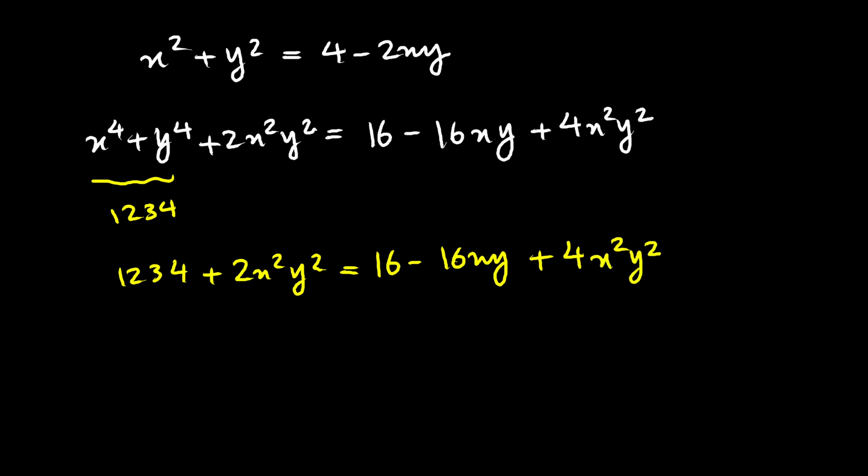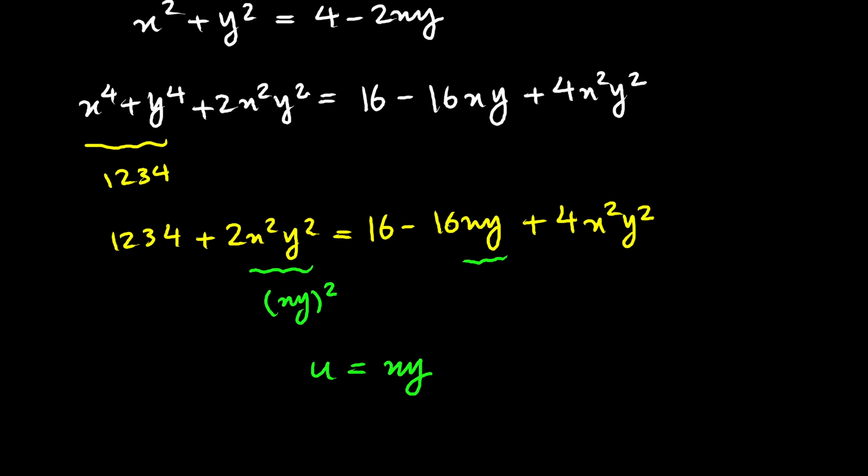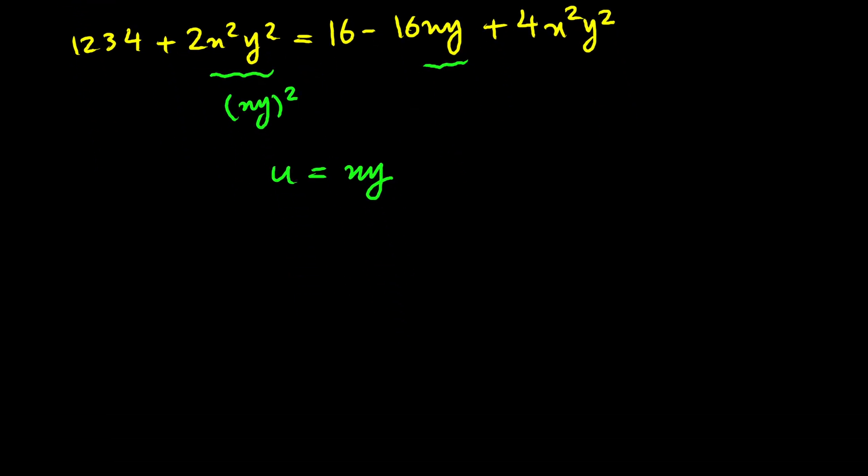Now, in our equation, everything is in terms of xy because we have xy itself and its square. And the great thing is that we want to solve for xy. So I'm going to replace xy with something like u to get a really nice equation. So we will have 1,234 plus 2u squared equals 16 minus 16u plus 4u squared.